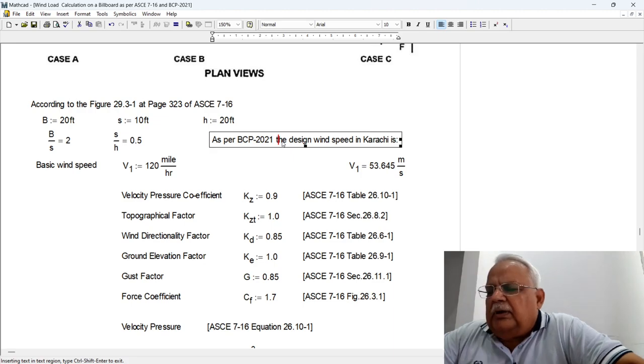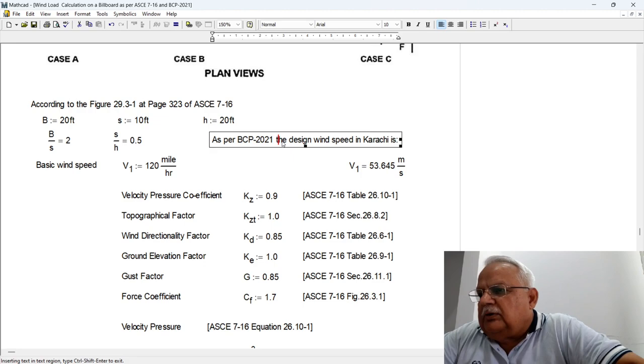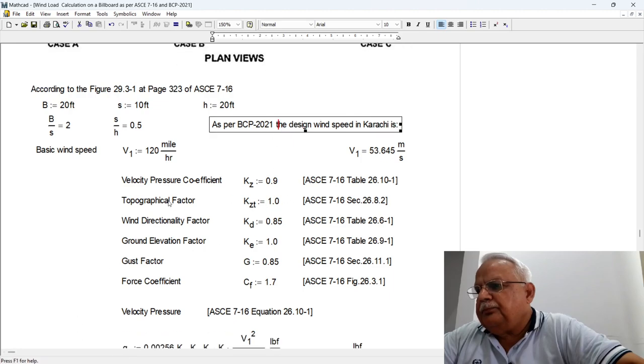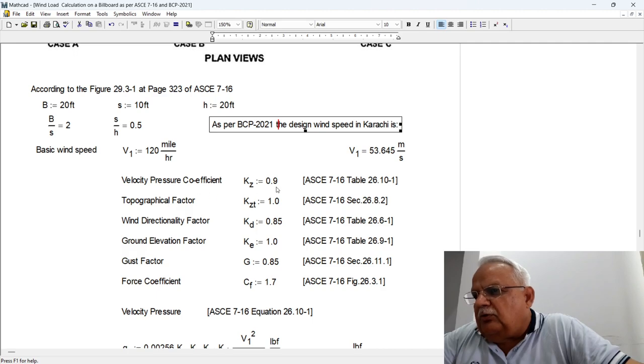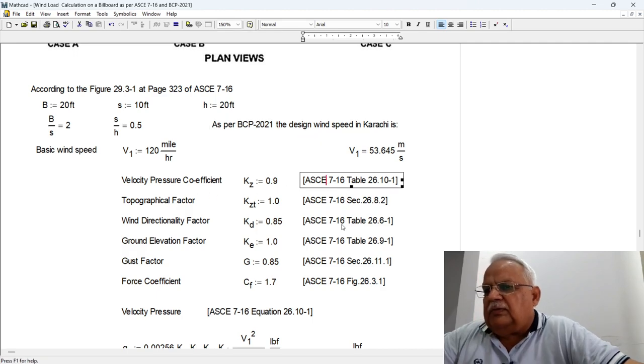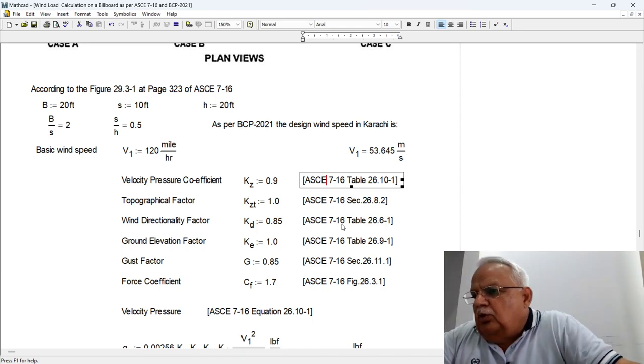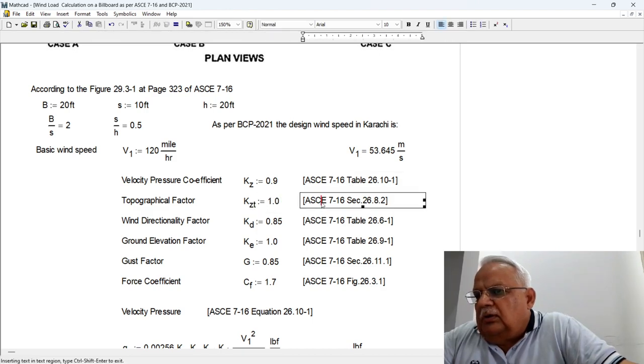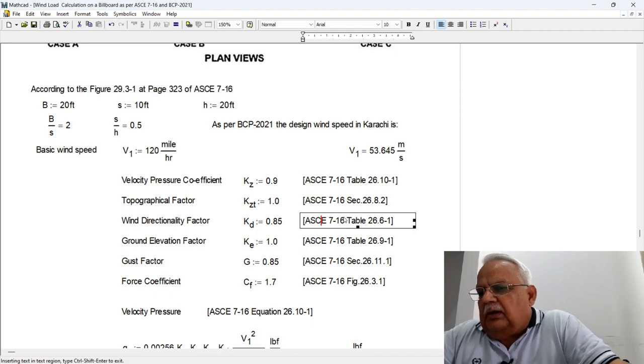As you know that the design wind velocity in Karachi is 120 miles per hour, which comes out to be something around 193 kilometers per hour or 53.645 meters per second. The velocity pressure coefficient Kz is 0.9, this is as per ASCE 7-16 table 26.10-1.